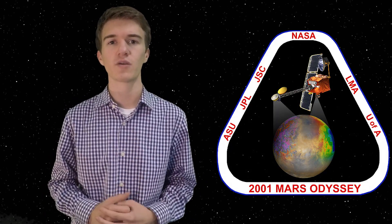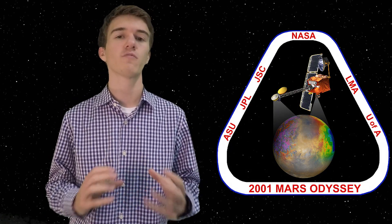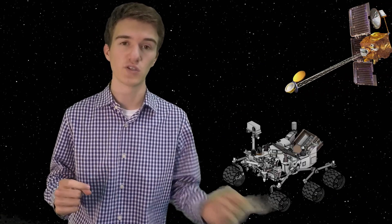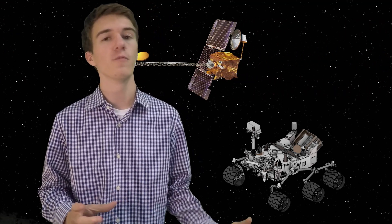What is Odyssey doing now? It's still a telecommunications relay, and it's actually really nice because since it's sun-synchronous, it flies over Curiosity twice a day, and that means that they're able to predict when we'll be able to talk to it and when we'll be able to send data back from Curiosity.